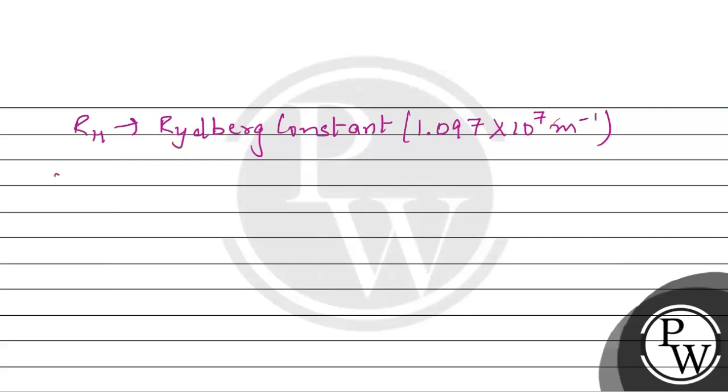और यहां पर जो n है, वो क्या है? Principle quantum number, जो की energy level, energy shells के बारे में बताता है.